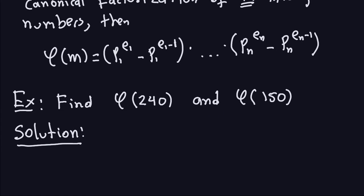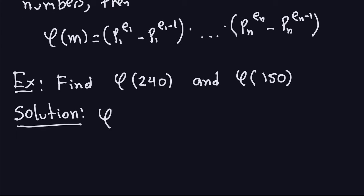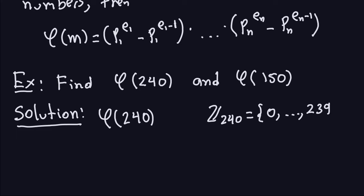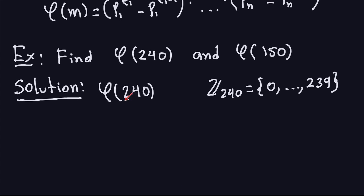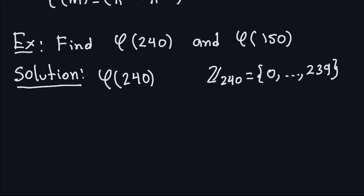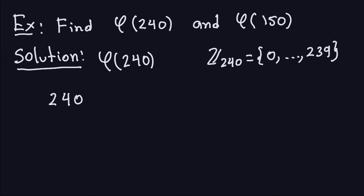Let's see a couple of examples. Let's find phi of 240 and phi of 150. By definition, phi of 240 counts all numbers that are relatively prime with 240 from 0 to 239. If we were to compute this the old way, we'd have to go through the entire list from 0 to 239 and check each one. We're not going to do that — we're going to use the theorem. So the first thing we need is the factorization of 240. Since 240 is not a huge number, let's factor it by hand.